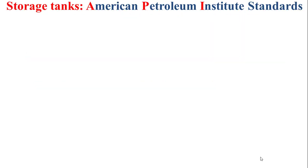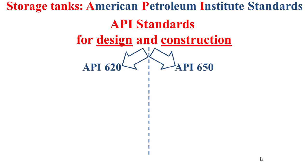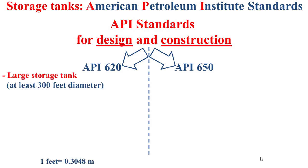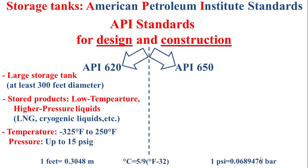Now for the American Petroleum Institute API standards associated with the design and construction of storage tanks, we have the API 620 and the API 650. The API 620 is associated with large storage tanks — large meaning at least 300 feet in diameter. The stored products are principally low-temperature, higher-pressure liquids such as liquefied natural gas (LNG) and cryogenic liquids. The operating temperature is between minus 325°F to 250°F, and the operating pressure is up to 15 pounds per square inch gauge.